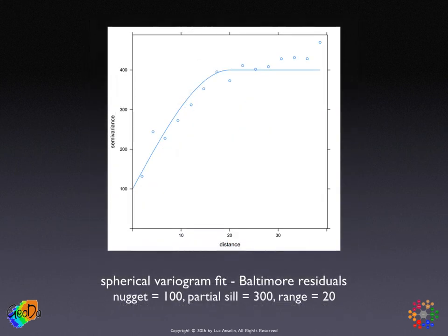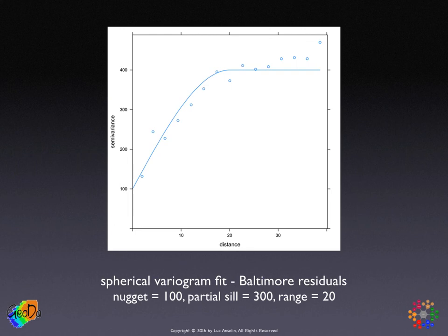The more traditional approach uses the empirical variogram. Here is our empirical variogram from the residuals in the second-order trend surface regression for the Baltimore house prices we used in the previous class. By eye, you see a rough shape of increasing values for the semivariogram, and then they reach a point where they start to flatten out. So you guess: the nugget is roughly 100, the sill where it becomes horizontal is roughly 400, the partial sill is the difference — that's 300 — and the range is roughly 20.